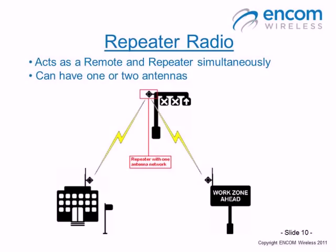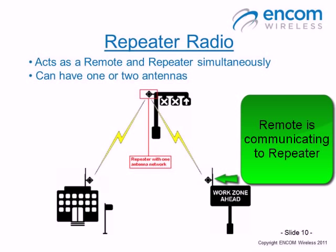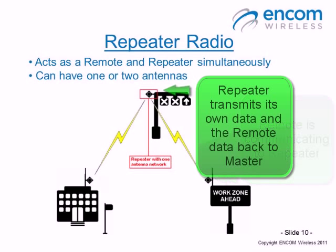Another important fundamental concept is that of a repeater radio. A repeater radio is used when a remote cannot talk directly back to its master radio. The remote will instead talk to a repeater radio, and the repeater radio will act as both a master and a repeater, communicating back to the original master.